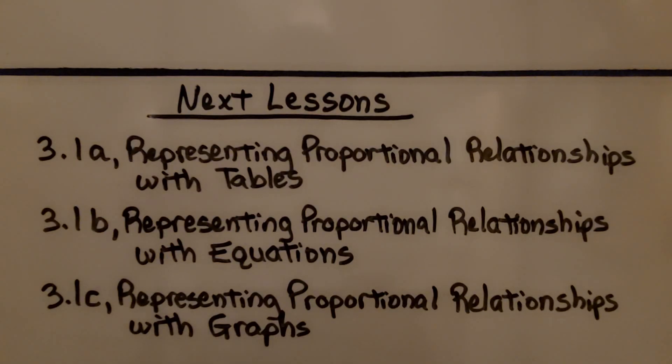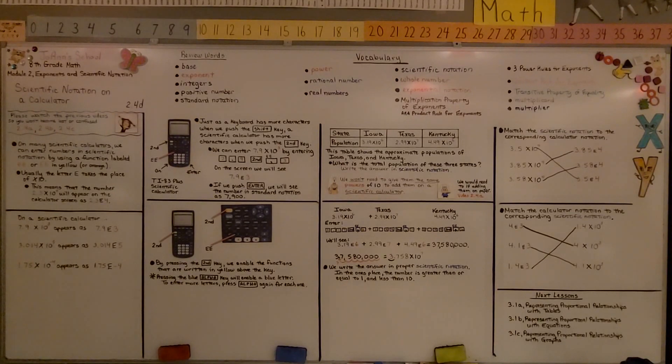We're now finished with module 2, and we're going to be moving on to module 3. We're going to learn about representing proportional relationships, either with tables, equations, or graphs. And remember, if you don't have a scientific calculator, you can still add the scientific notation by making sure they all have the same power of 10. I hope you have a great day, and I hope you join me for the next lesson. Bye.